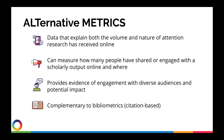Altmetrics show how many people are sharing or engaging with a scholarly output and where that engagement is happening. They provide evidence of engagement with diverse audiences and potential downstream impact — going beyond just academia to look at how the public, funders, and government organizations are engaging with research. Altmetrics are intended to be complementary to bibliometrics or citation-based metrics, not to replace the H-index or journal impact factor.